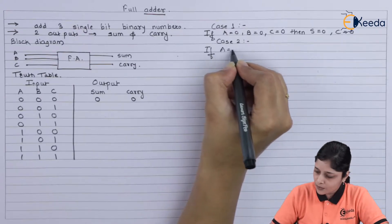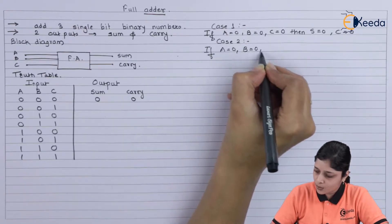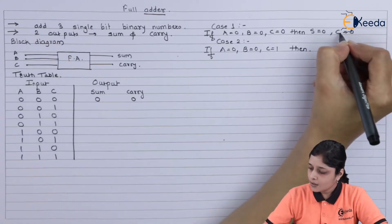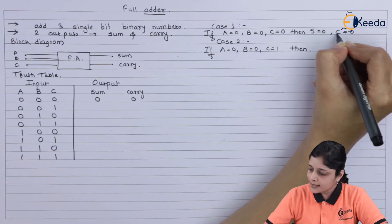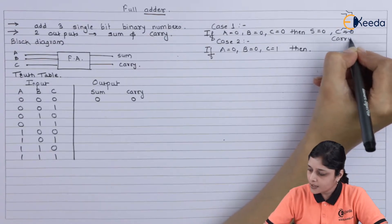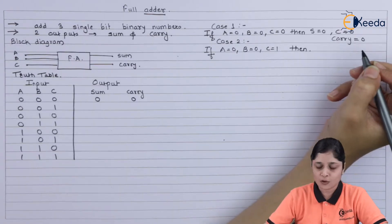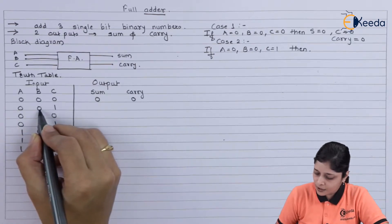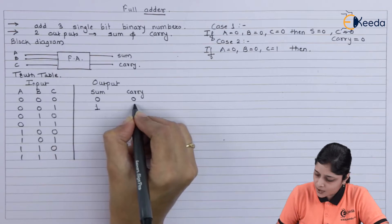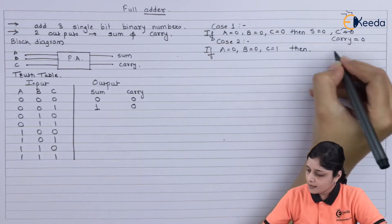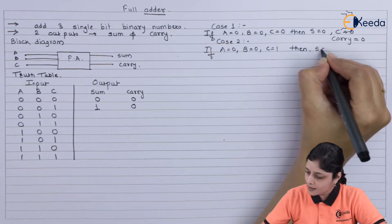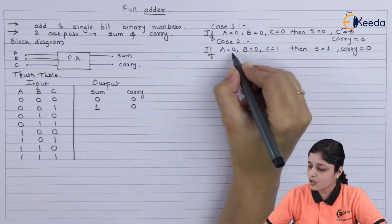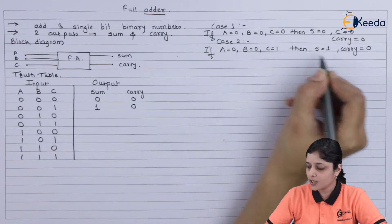Case 2: if A equals 0, B equals 0, and C equals 1, then carry equals 0. Now 0 plus 0 is 0, and 0 plus 1 is 1, so sum is 1 and carry is 0. We write sum as 1 and carry as 0, because 0 plus 0 is 0 and 0 plus 1 is 1.